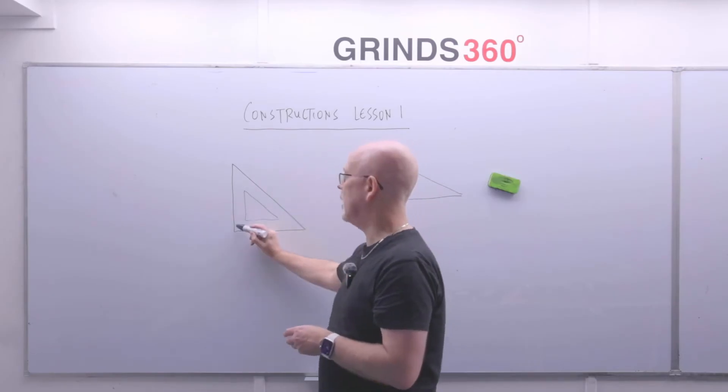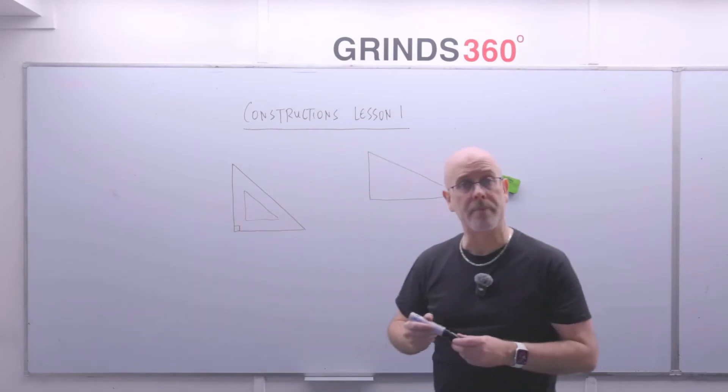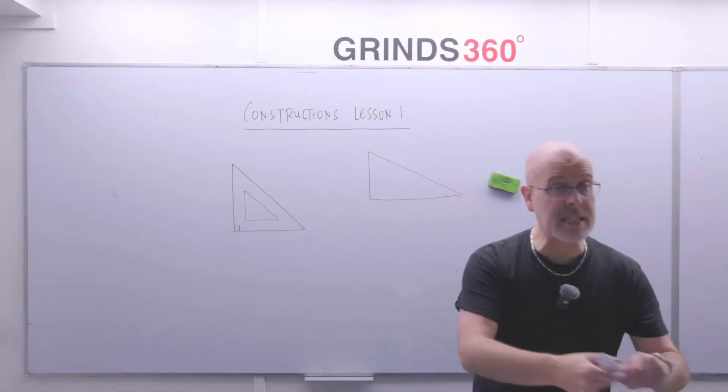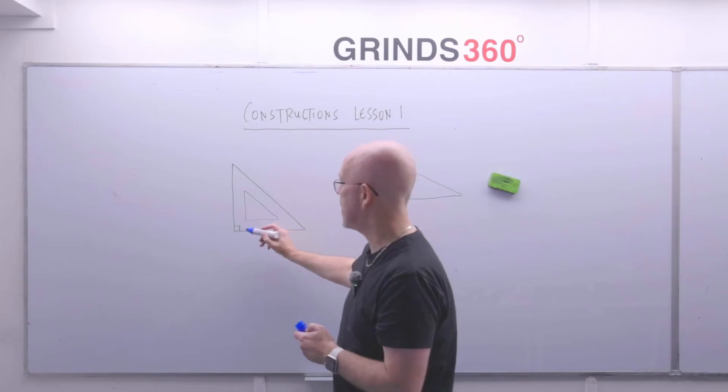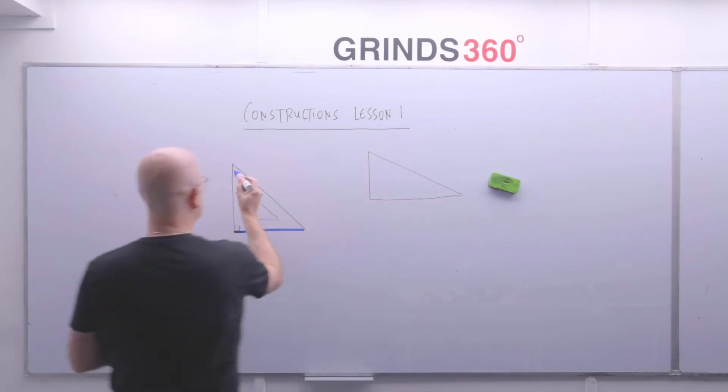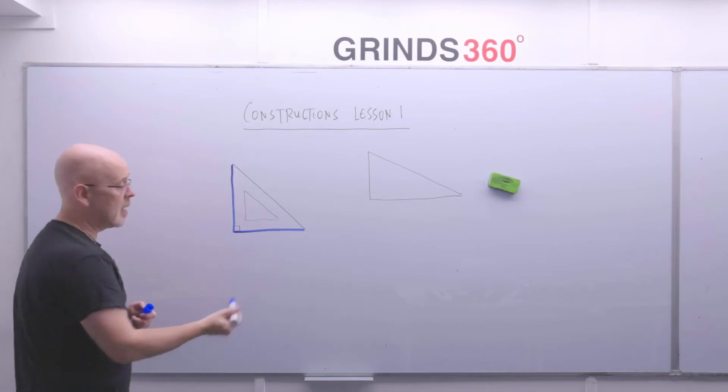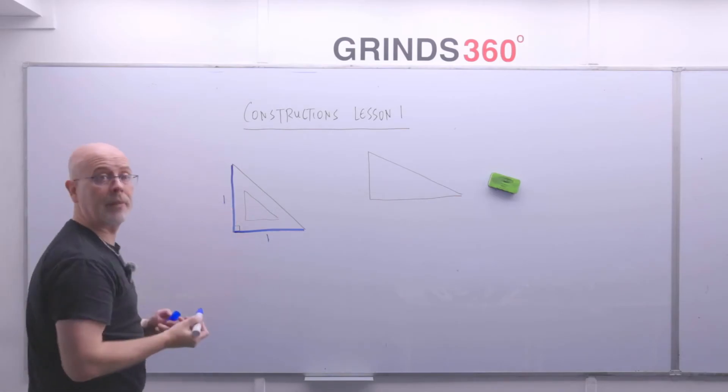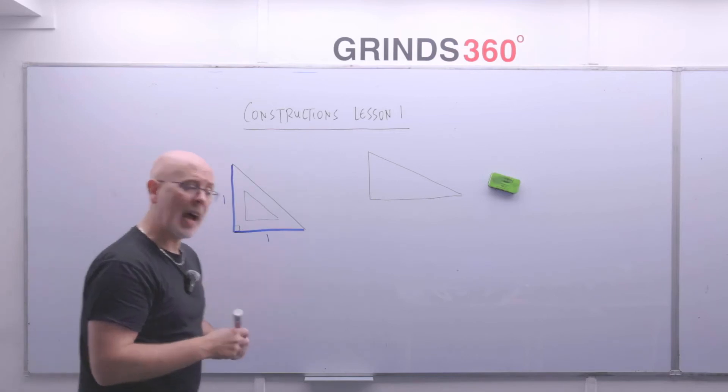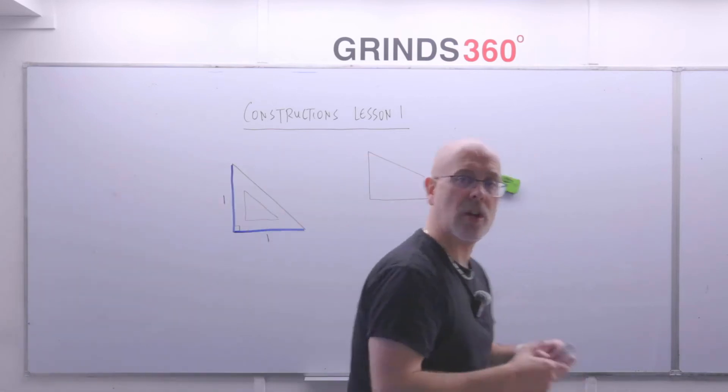So if you look at that set square there, there's a right angle in this corner here, all right? And what defines this particular set square is that side there and that side there are the same length. In the other set square all three sides are different lengths, and this one here they're both the same length. So if you say that's one unit there, it means so is that one because they're the same length.